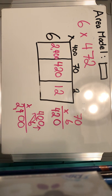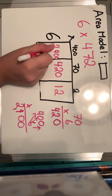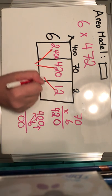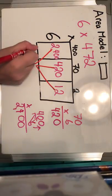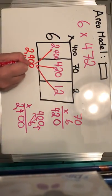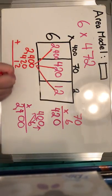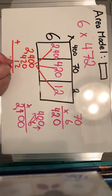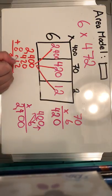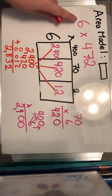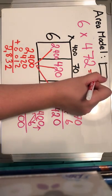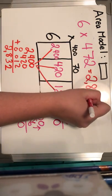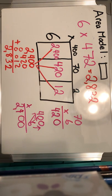Now all you're going to do is take these numbers that are inside the box — the 2,400, the 420, and the 12 — and you're going to add them all together. I'm not expecting you to do this in your head, so go ahead and write them all down. Zero plus zero plus two is two. Zero plus two plus one is three. Four plus four is eight. So six times 472 is going to give me a product of 2,832. This is area model with multi-digit times one digit.